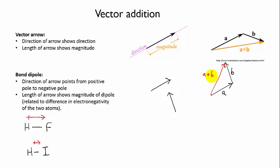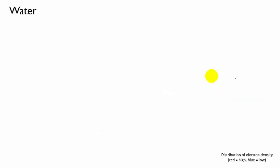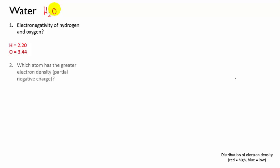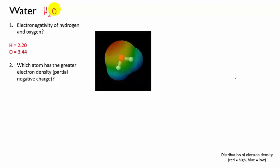Let's try this out with a real molecule. We're going to work out the molecular dipole of water. We know that the formula of water is H2O. So we need to know the electronegativities of hydrogen and oxygen. We find that hydrogen is 2.2 and oxygen is 3.44. So the next step is we say which atom has the greater electron density. And you can see that the more electronegative atom is oxygen. So it's going to be the one that has the greater electron density.